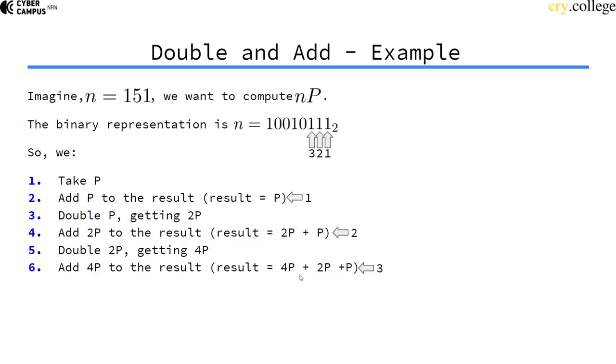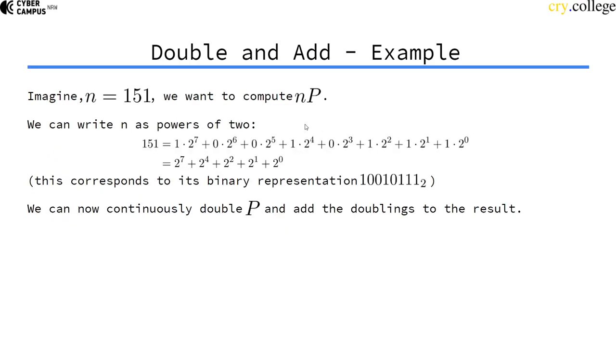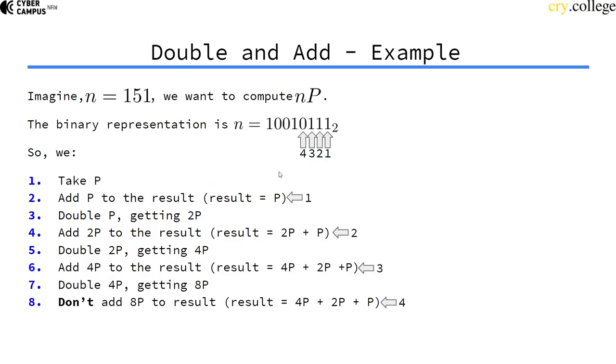The next step we double P again, we always do the doubling, and get 8P. Now we check, this bit is actually not set, this was 0 here so it's not in the actual representation. So we don't add 8P to the result. We go to the next iteration and we double P again, we get 16P.